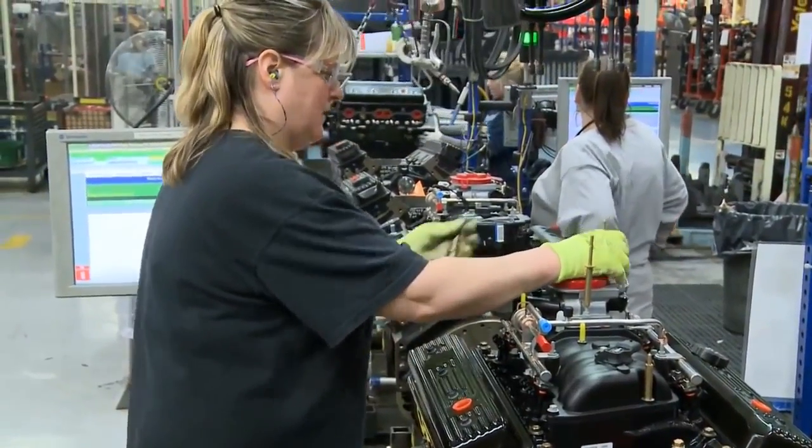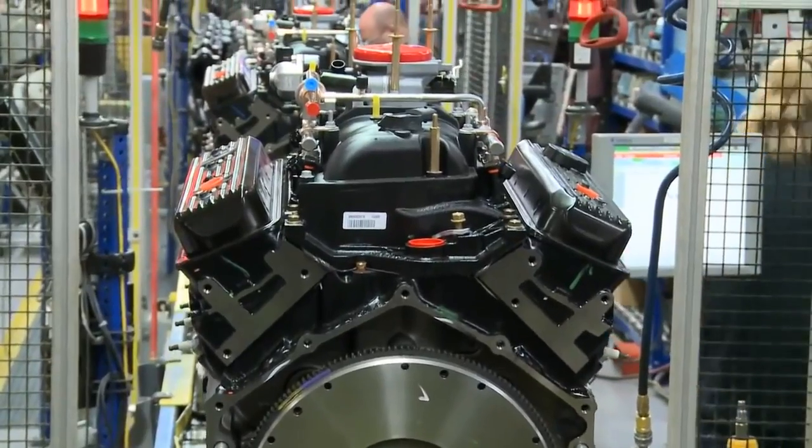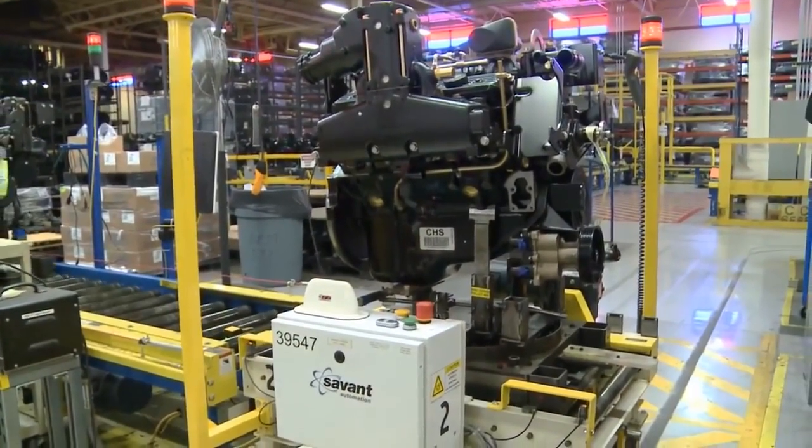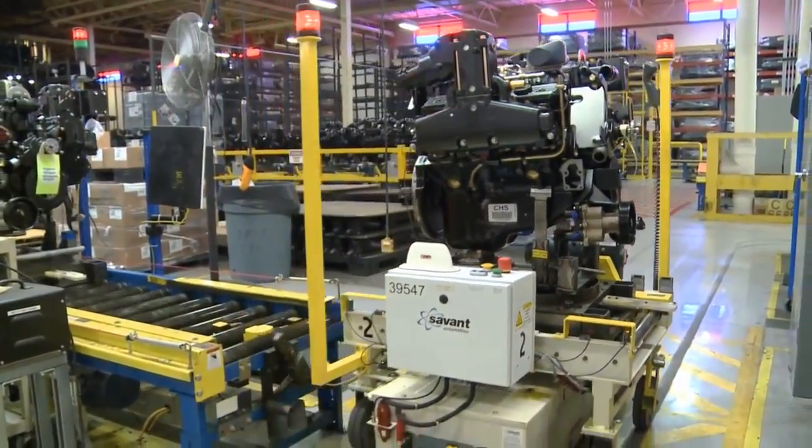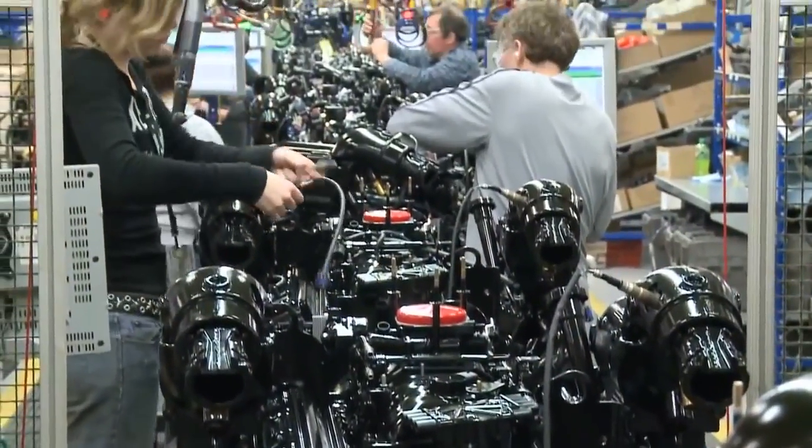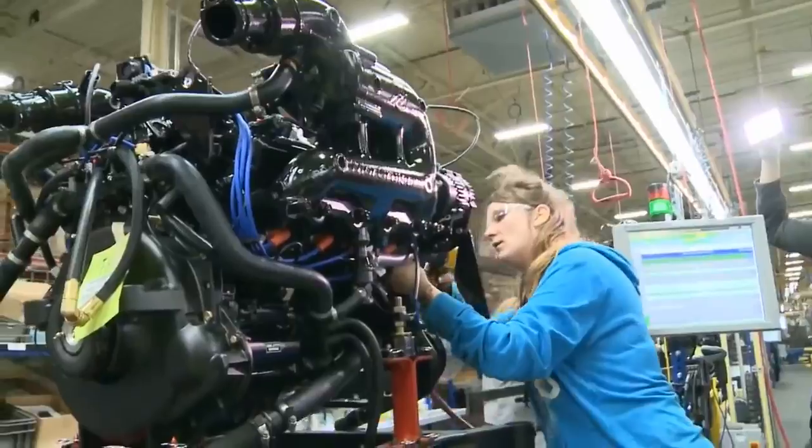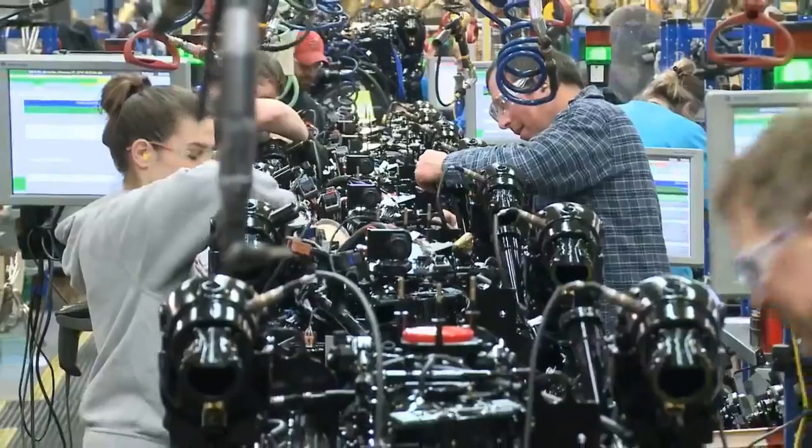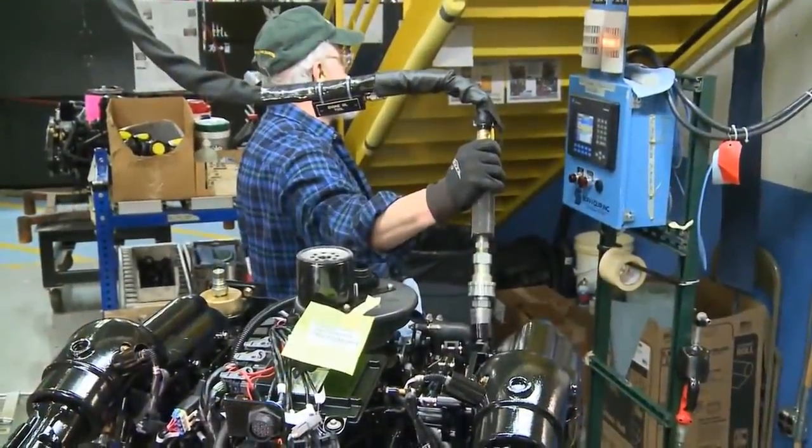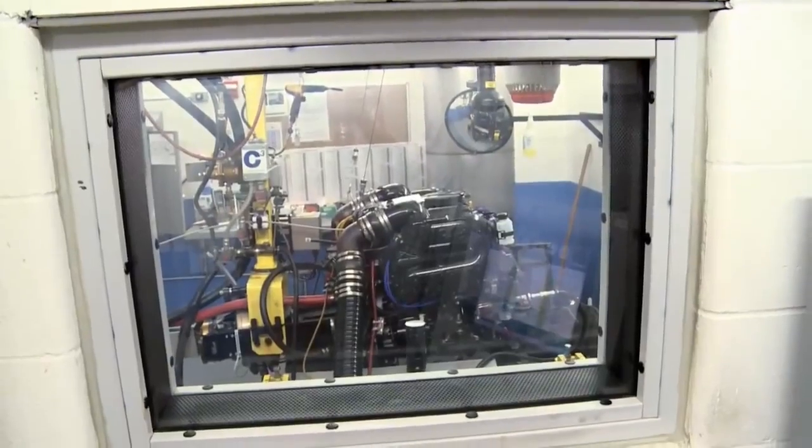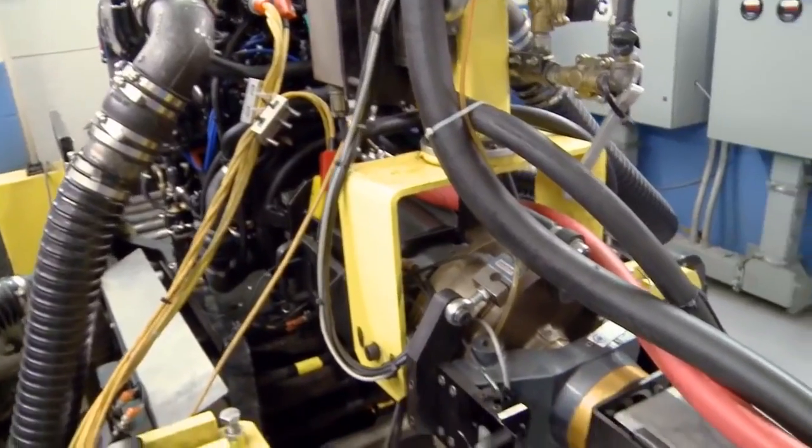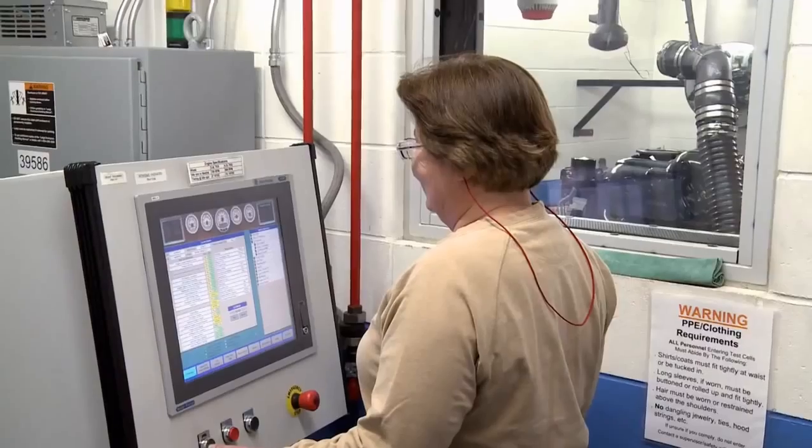Once the long block is assembled, the engine heads for the first of two assembly lines where it is further marinized and prepped for painting. Robots make it easy to move the engine from station to station. Now, with its baked-on paint finish, technicians install the electrical distribution panel, alternator, cool fuel module, and other key components. The engines are filled with oil and head for the test cells where they are attached to sophisticated testing equipment. During the series of tests, they also go through an accelerated break-in. Just like Mercury outboards, every MerCruiser engine is tested to ensure it runs flawlessly before it leaves the plant.